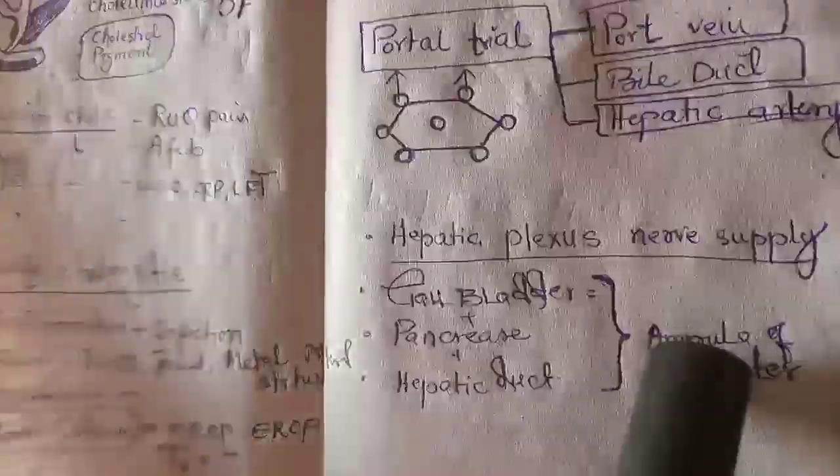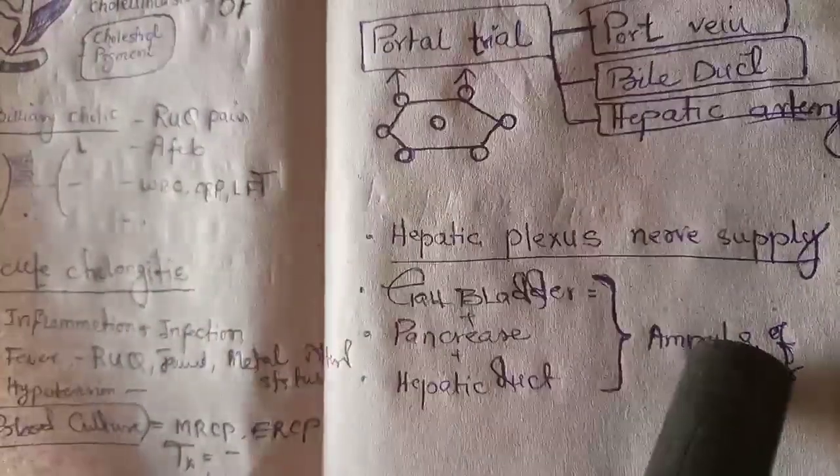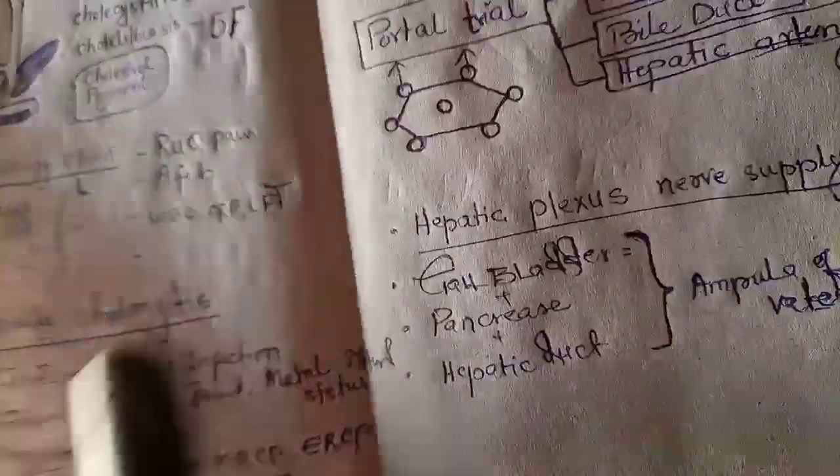That hepatic plexus includes supply from the gallbladder, from pancreas, from hepatic duct, and these three structures combine and then form a new structure which opens into ampulla of Vater and duodenum.